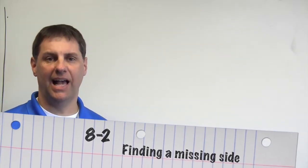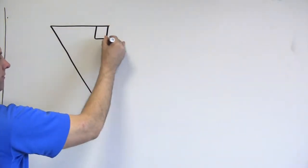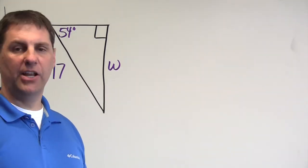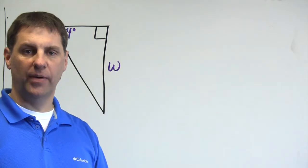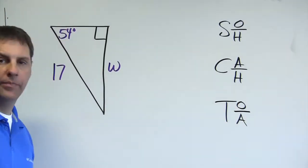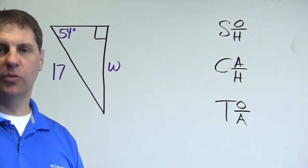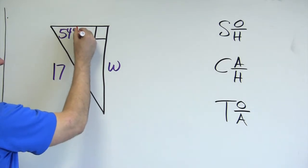For this next set of examples, we're finding missing sides in a right triangle using trigonometry. I recommend writing down the sine, cosine, and tangent ratios at the top of your paper for reference. When doing this type of problem, first find your point of reference — what angle are you given? Then identify which sides you're looking for and which you're given. In this picture, 54° is my point of reference.